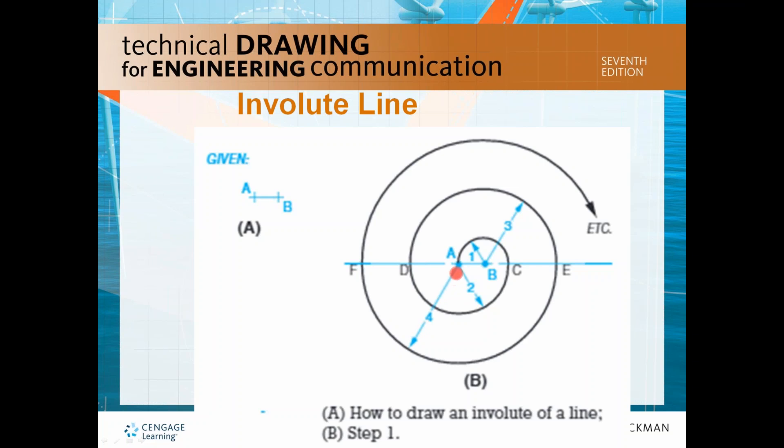So as you can see, you use your swing point 1 and 3 at B, and you're going to swing this arc from swing point A with radius 2 and 4.